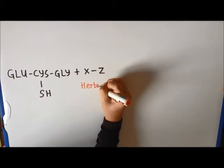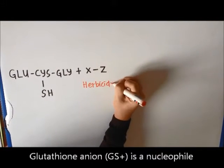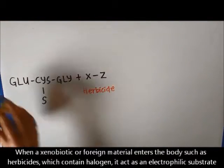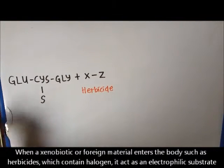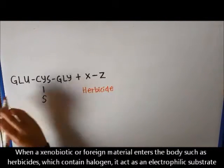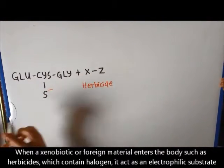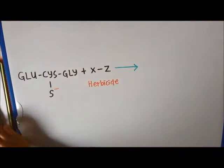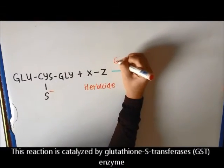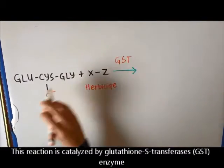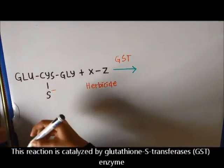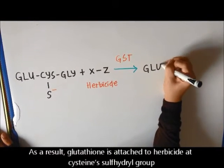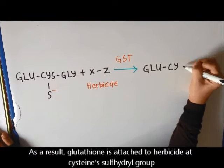Glutathione is a nucleophile. When a xenobiotic or foreign material enters the body, such as herbicides which contain halogen, it acts as an electrophilic substrate. This reaction is catalyzed by glutathione S-transferase enzyme. As a result, glutathione is attached to the herbicide at the cysteine sulfhydryl group.